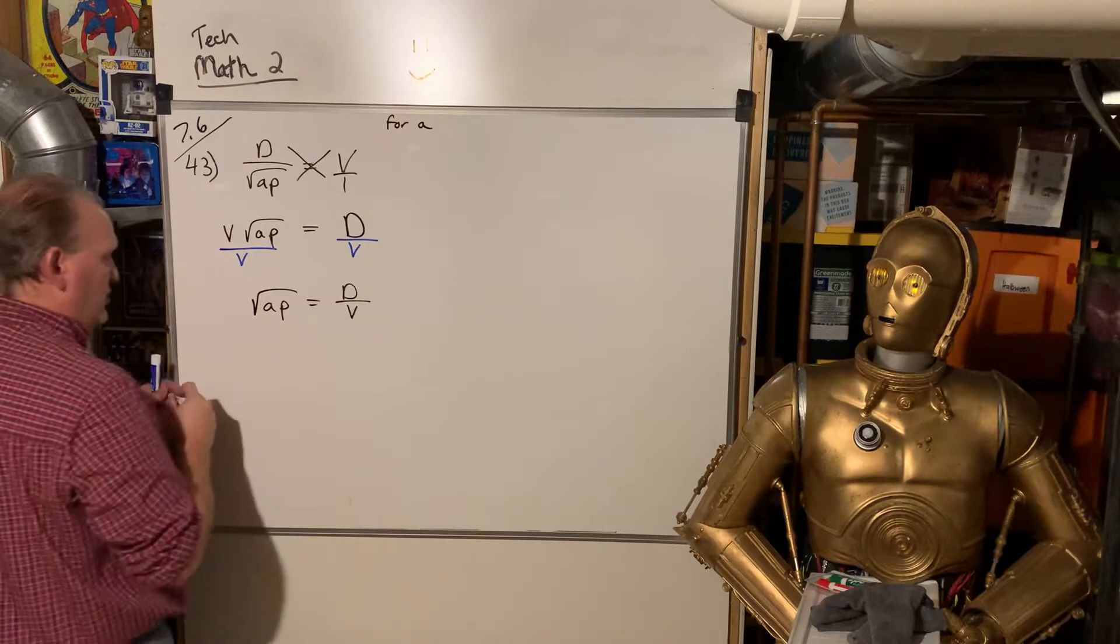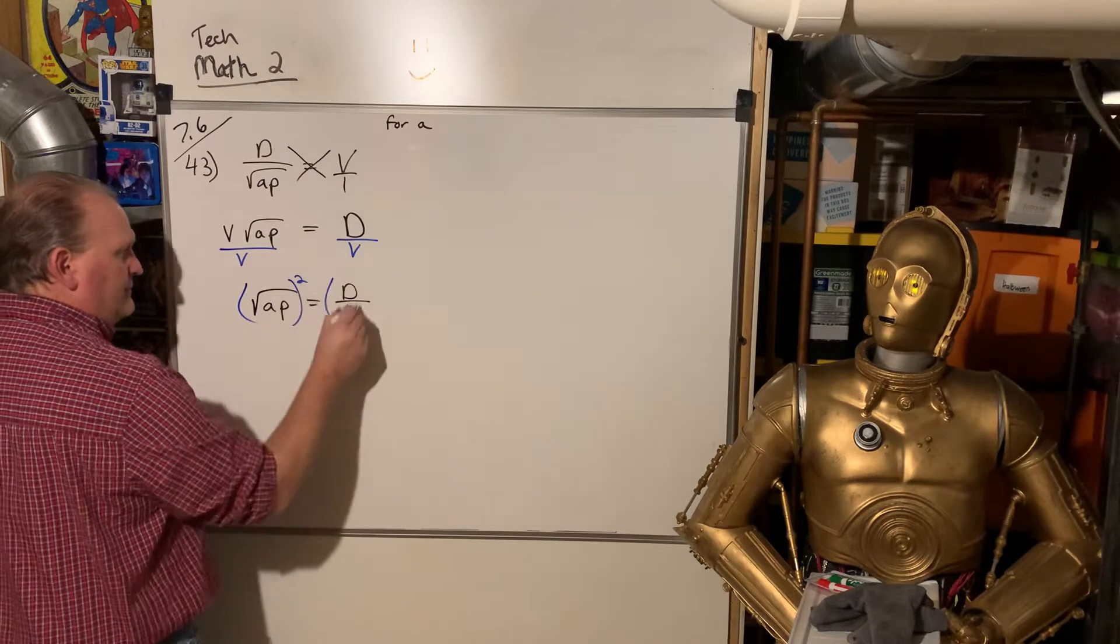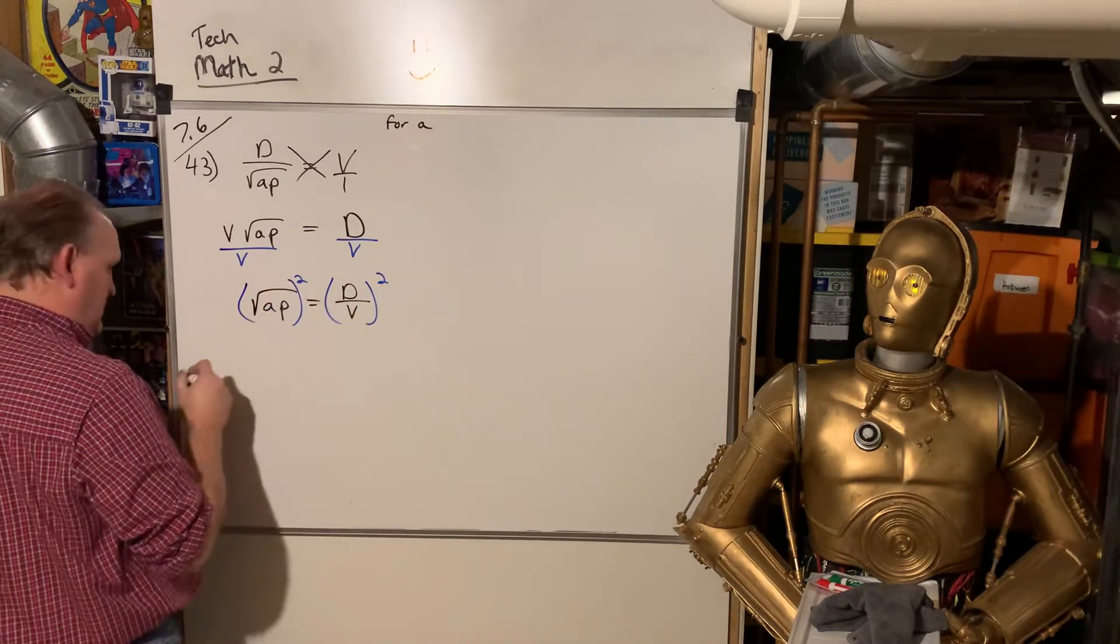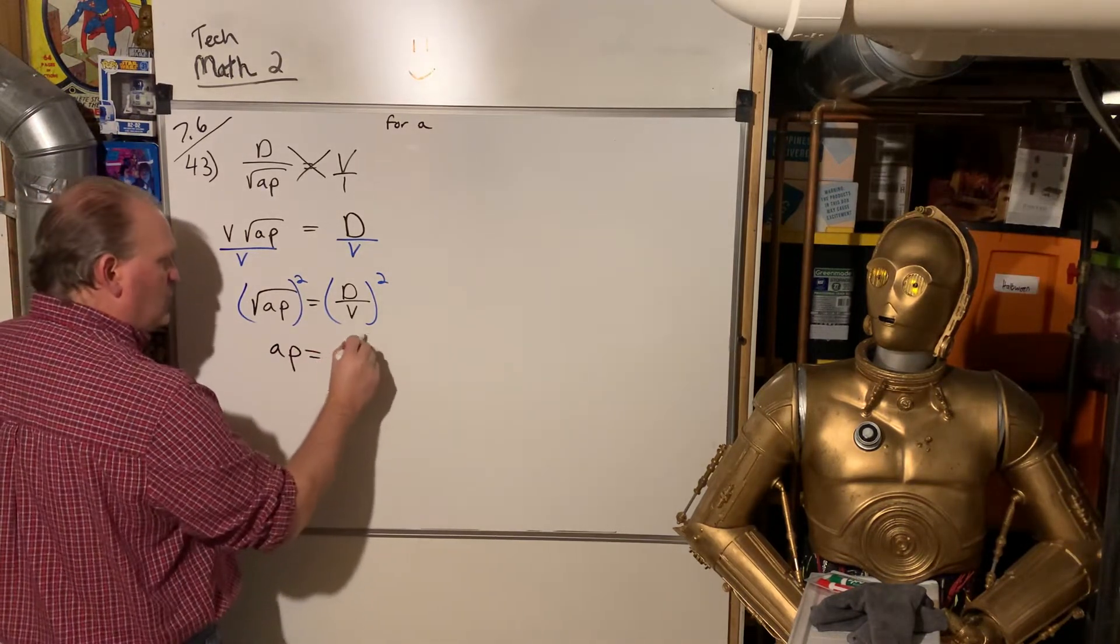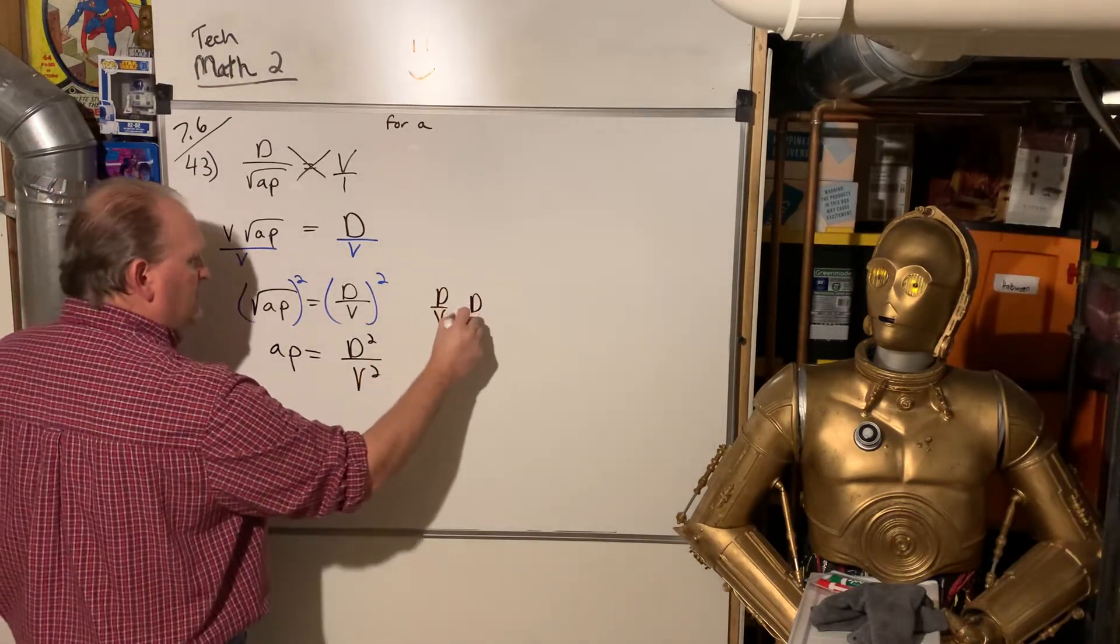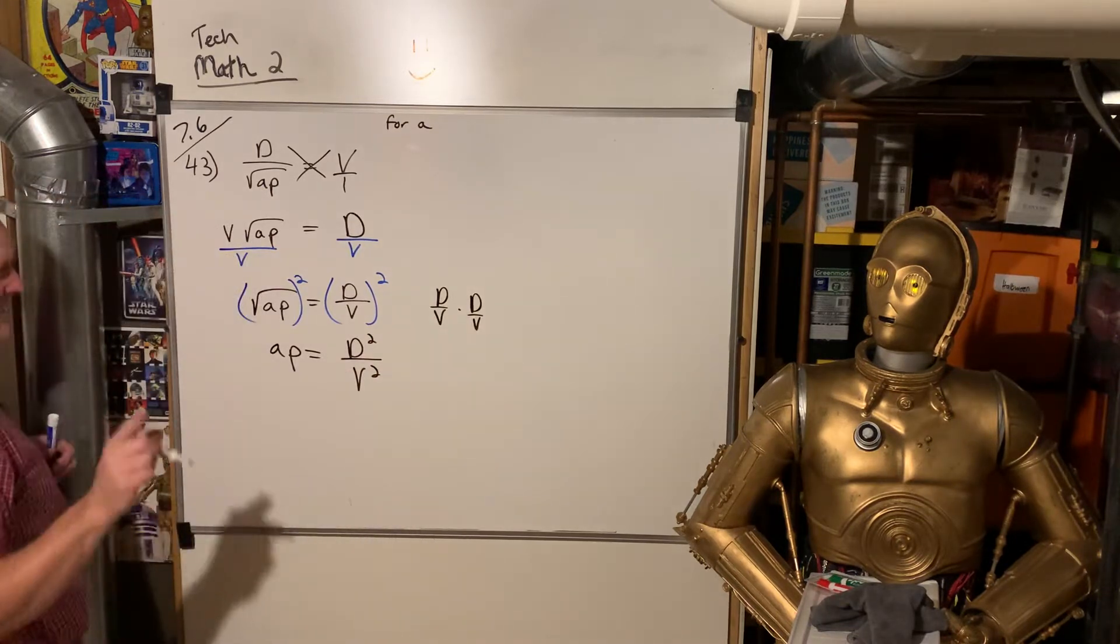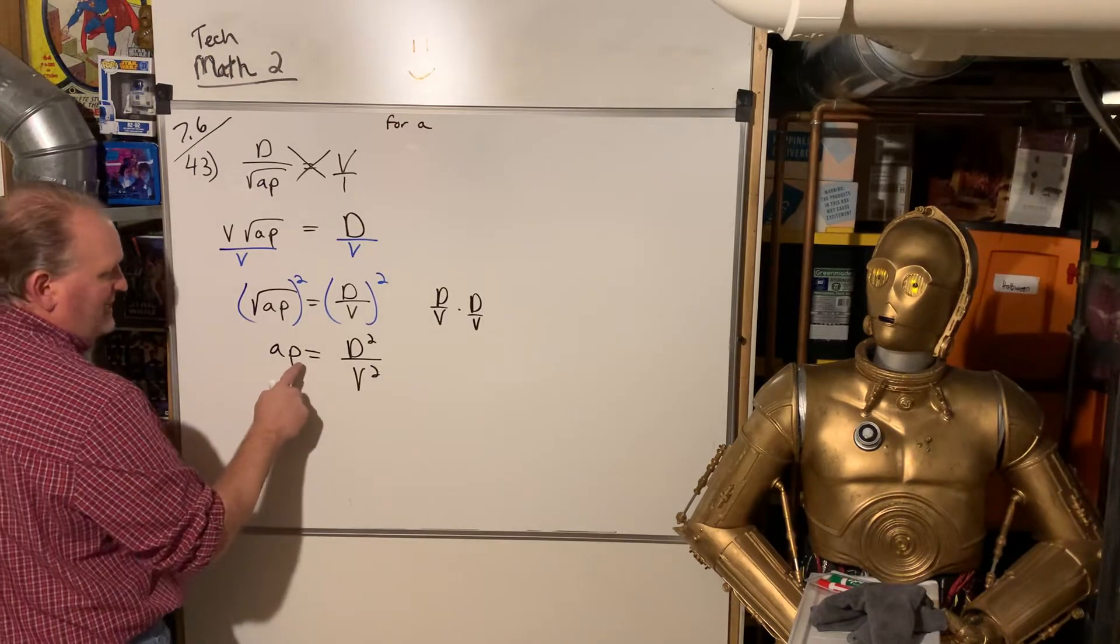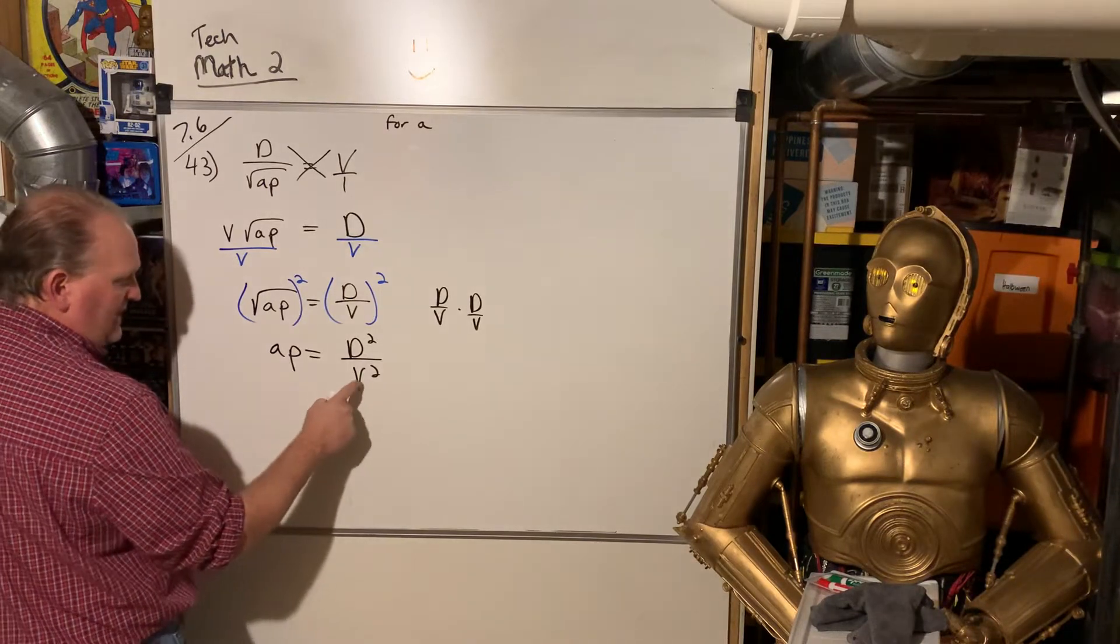Now, let's square both sides. That will get that A out of the square root sign. That squared and the square root cancel each other off. We have AP is equal to D squared over V squared. Because remember, that's D over V times D over V. So D times D is D squared. V times V is V squared.